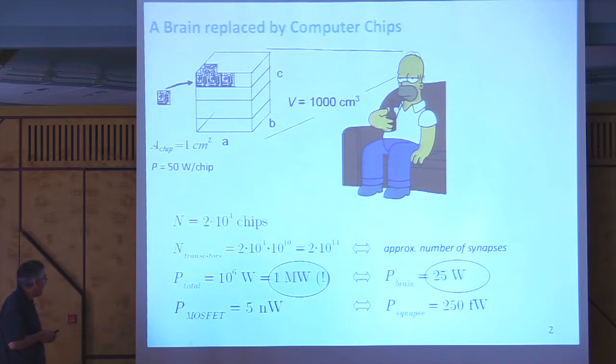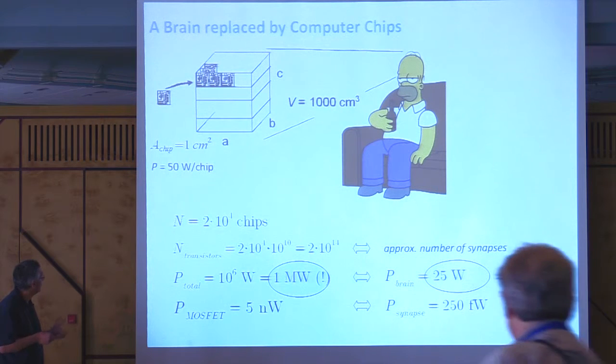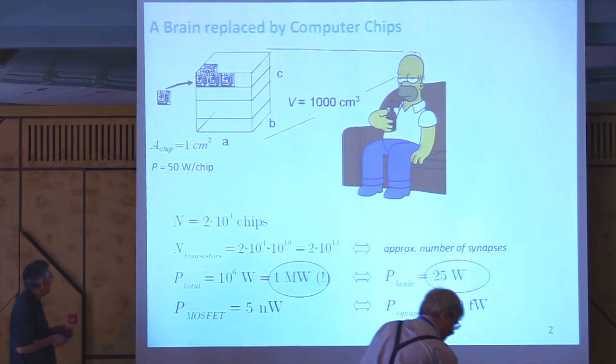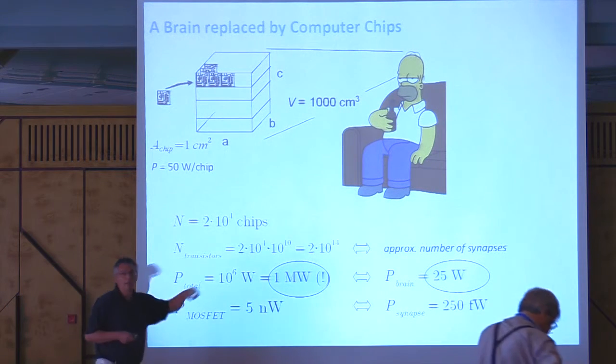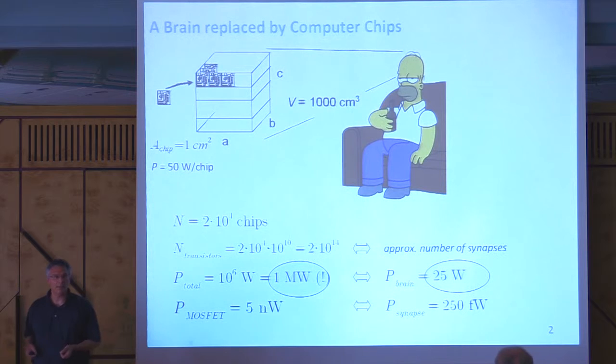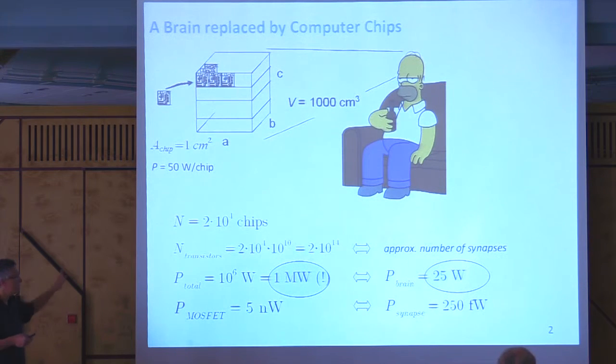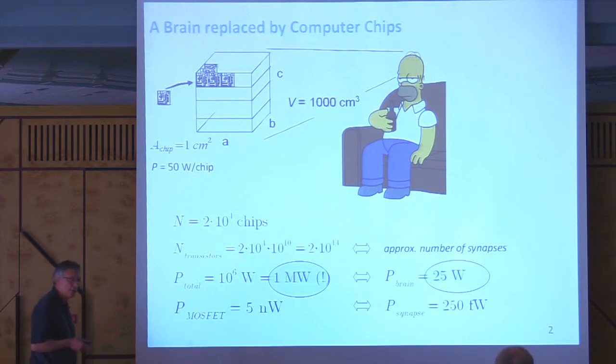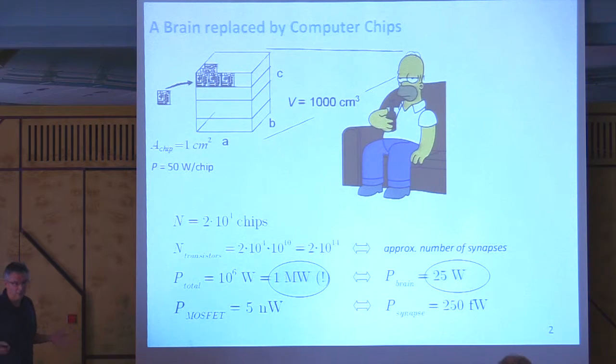When you count the numbers of transistors, it's approximately the same numbers, two times 10 to the power of 14 synapses in the brain. When you claim that all processors working simultaneously with 50 watt, you end up with one megawatt. So the message is the same. When you compare it to the brain, you have something like 25 watt. This already means the architecture in digital computing and the neuromorphic system is totally different.